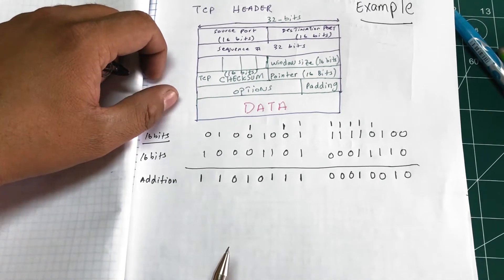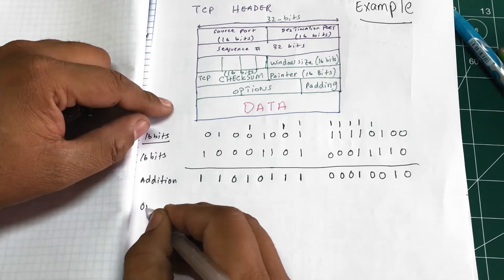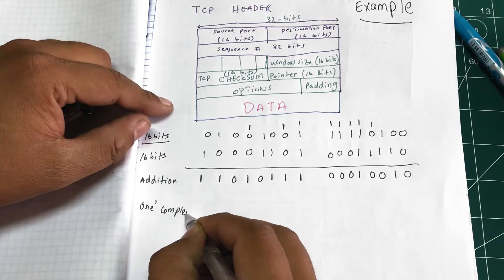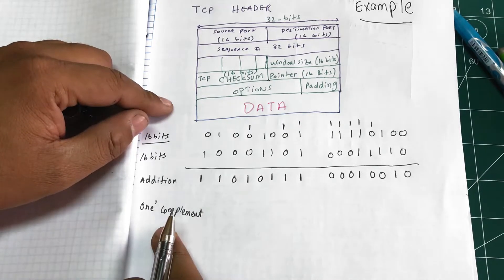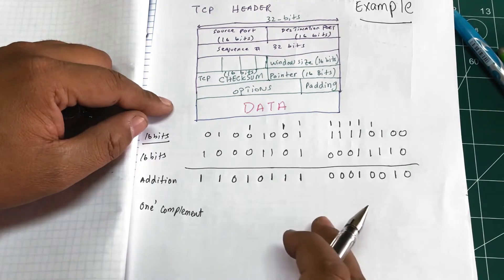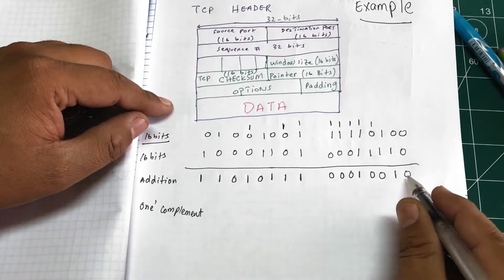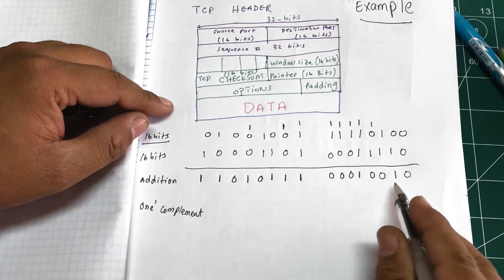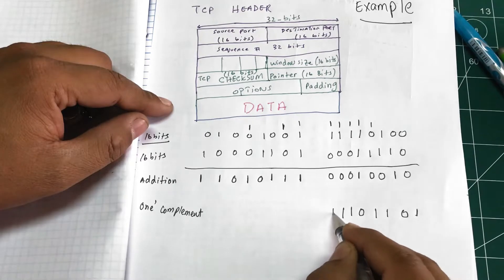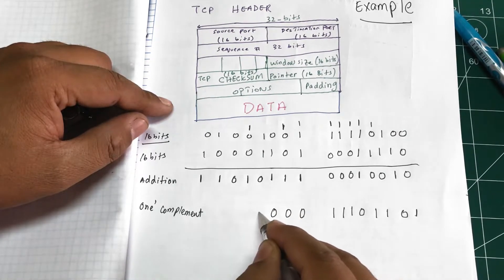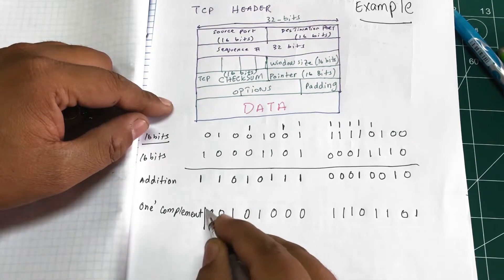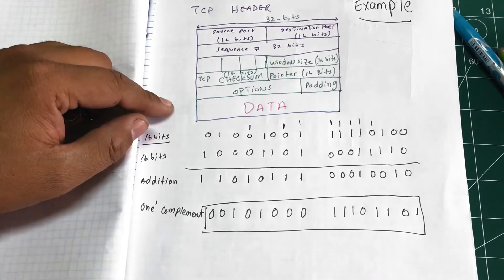Once the binary addition is done, you take the one's complement — that's it, that's how simple it is. For one's complement, wherever you have a 0 you replace it with 1, and wherever you have a 1 you replace it with 0. So the result flips all bits, giving you your checksum value.